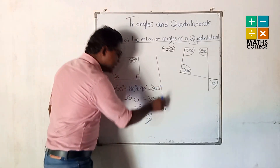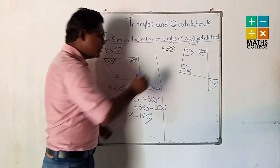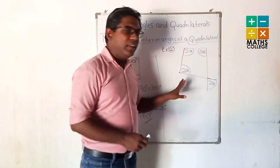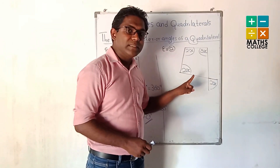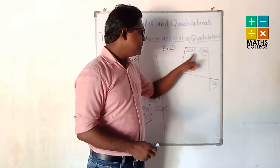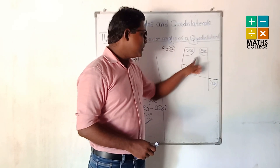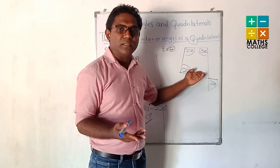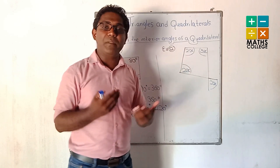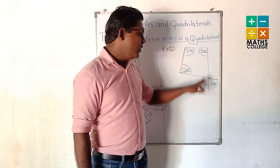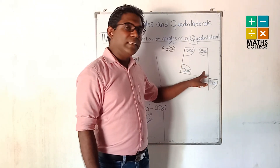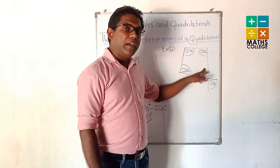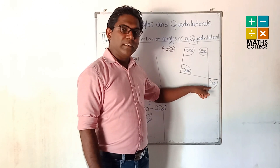Now the second example. We have to find x, where the angles are x, 2x, 3x, and 2x. The fourth angle is not directly mentioned, but using our previous knowledge we can identify a vertically opposite angle — it is also 2x.